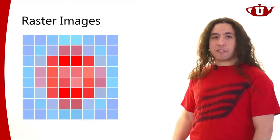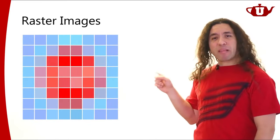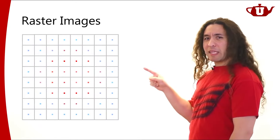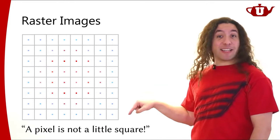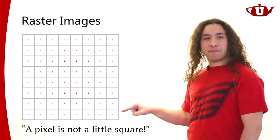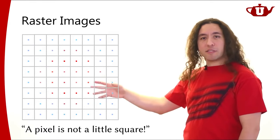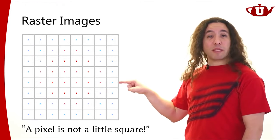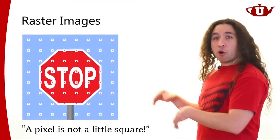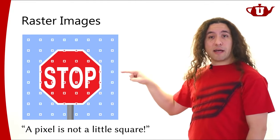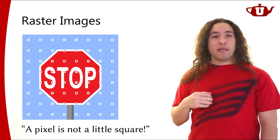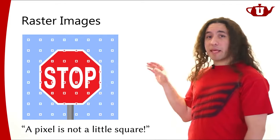Going back to raster images: a raster image is made out of pixels, but representing pixels as little squares is not quite accurate. A pixel is not a little square — a pixel determines a point sample, a value at a point, typically the value of some 2D function at the center of the pixel location. So imagine our 2D function is an image; our pixels are going to be the values at the centers of these grid locations.